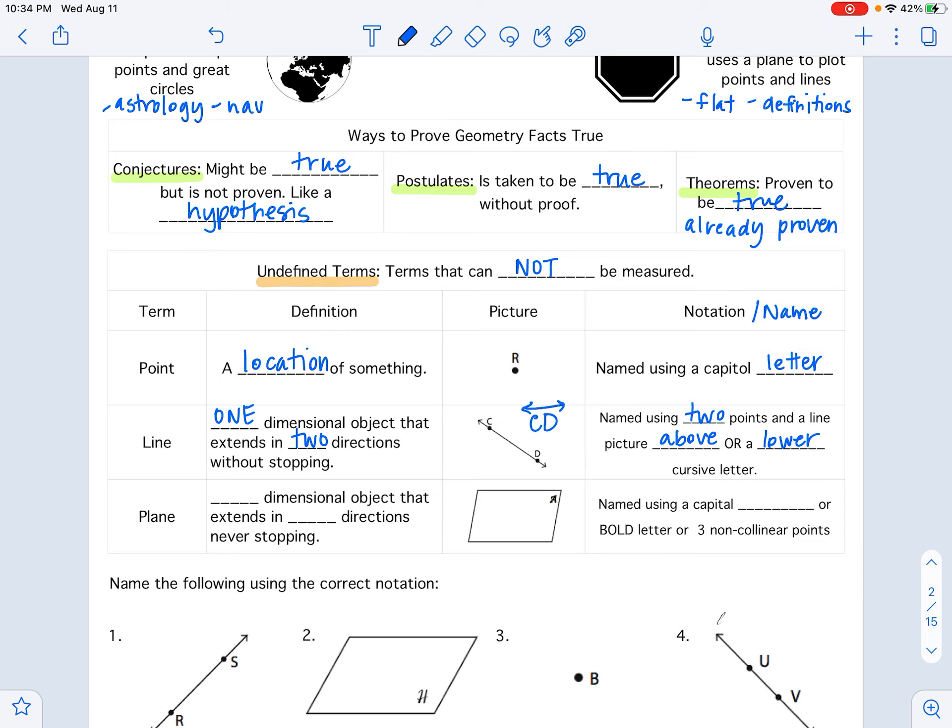A plane is a two-dimensional object that extends in all directions. Kind of looks like a tabletop or a nice rectangular parallelogram there. Pictures right next to it. We name it using a capital letter. Capital cursive letter. Or a bold letter. Or three non-colinear points. And we'll talk about what colinear is in a second.